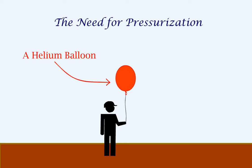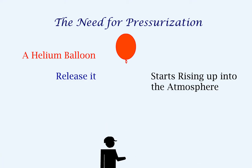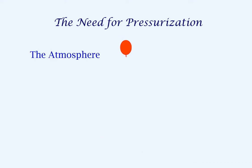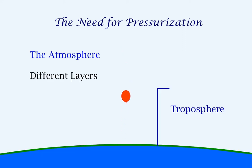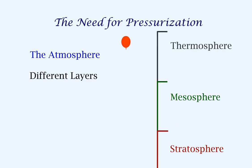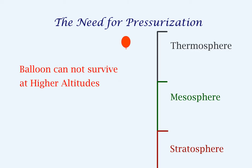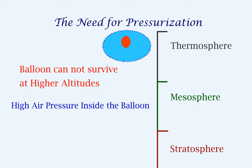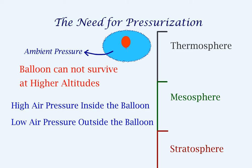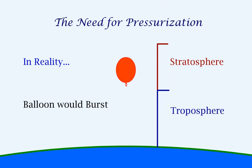If we take a helium balloon and release it, it starts rising into the atmosphere. If we look at the atmosphere, it is composed of different layers, starting from the ground with the troposphere, stratosphere, mesosphere, and the thermosphere. As we go higher, the pressure keeps decreasing. The balloon cannot survive at higher altitudes because there is high air pressure inside the balloon and low air pressure outside. The pressure around the balloon is called the ambient pressure. The low pressure in the stratosphere layer itself will cause the balloon to burst due to the severe pressure difference.